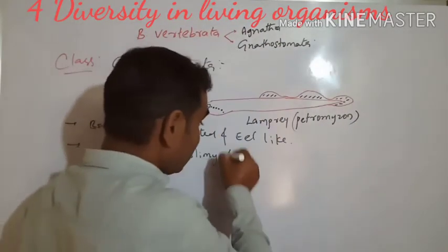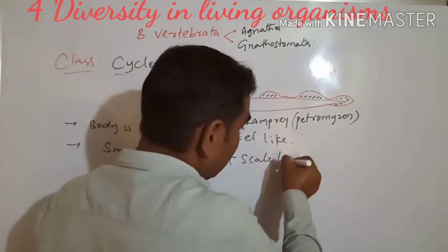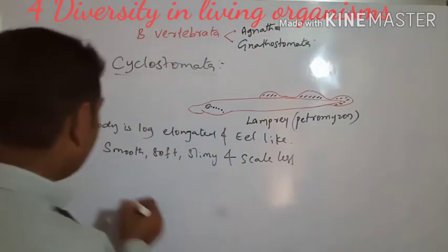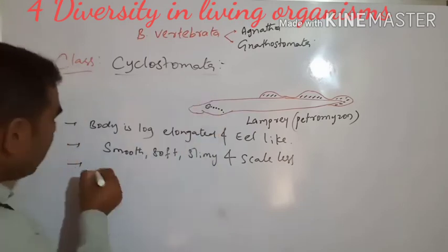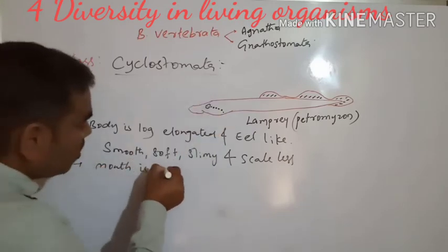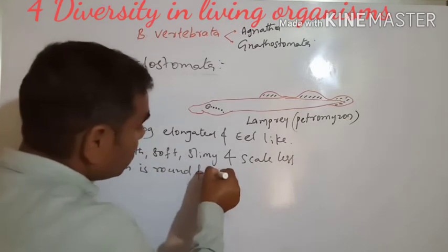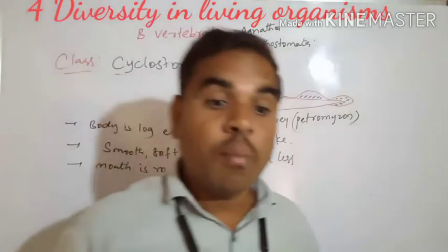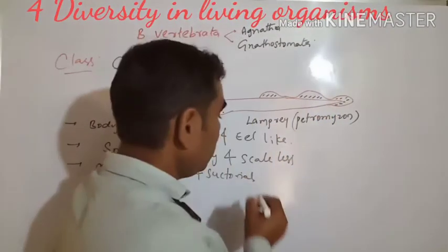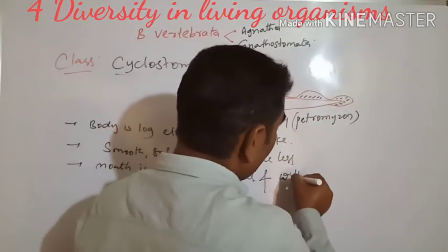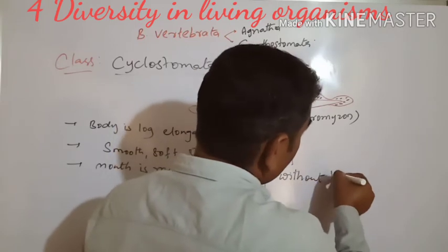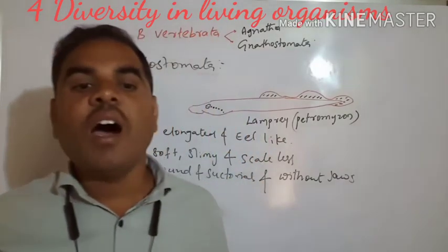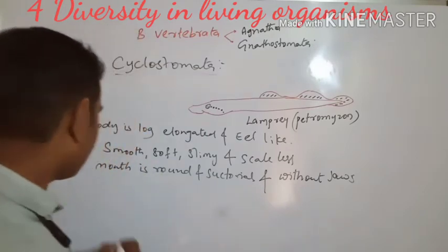The skin is scaleless. The mouth is round and suctorial. They suck blood and are without jaws. These organisms are ectoparasites — they live on other organisms, sucking blood and using their mouth to stick to the back of other fishes.